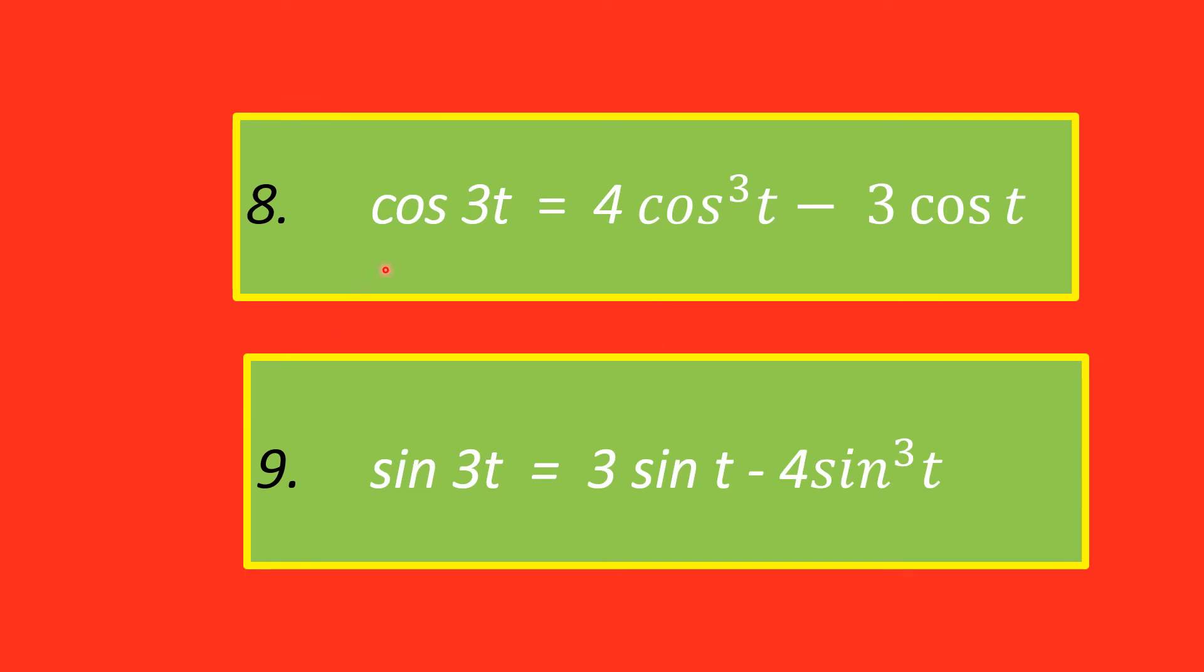Now cos 3t is equal to 4 cos cube t minus 3 cos t. Sin 3t is equal to 3 sin t minus 4 sin cube t.